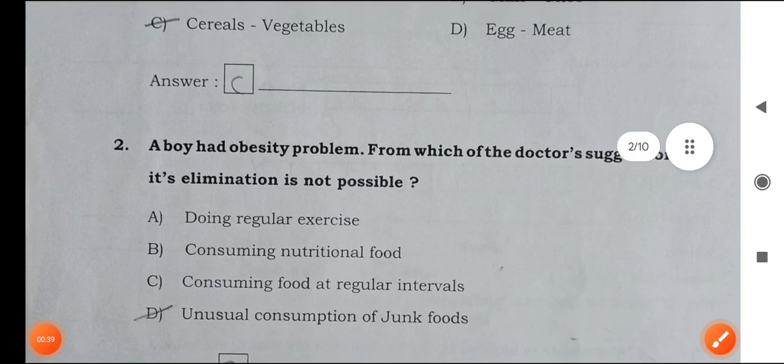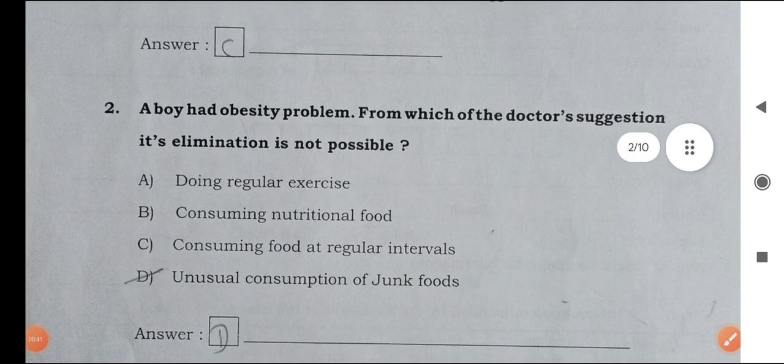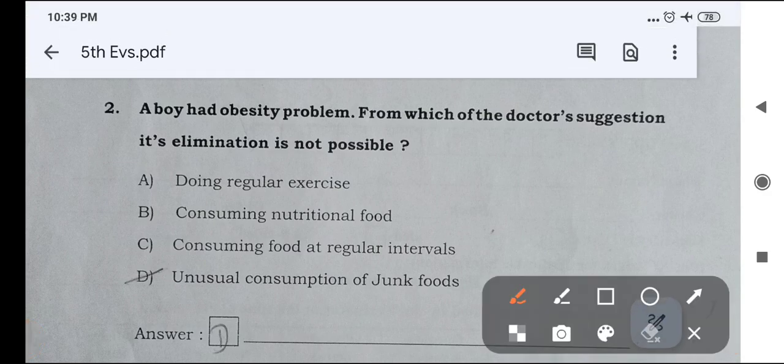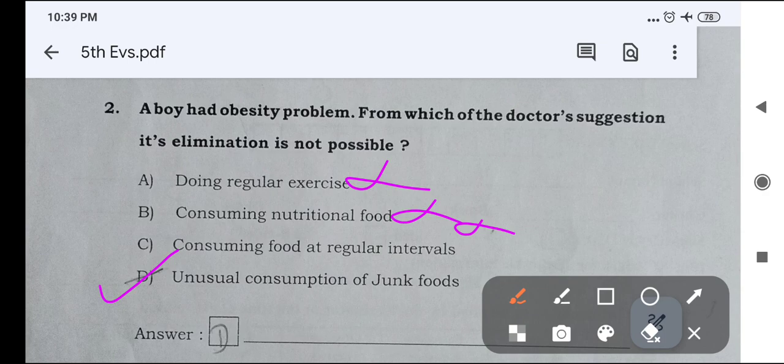Next one is, a boy had obesity problem. From which of the doctor's suggestions, its elimination is not possible? Doing regular exercise, wrong answer. Consuming nutritional food, wrong answer. Consuming food at regular intervals, wrong answer. Right answer is D, unusual consumption of junk foods.